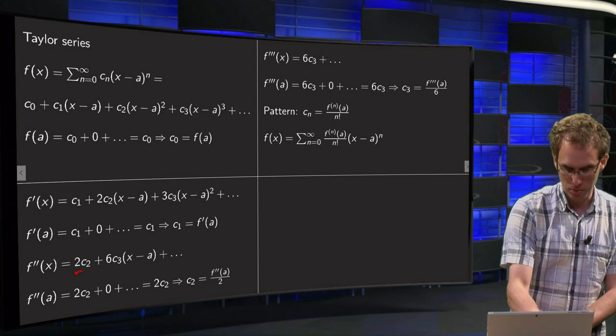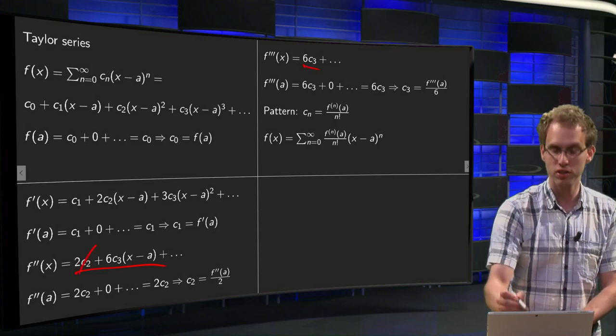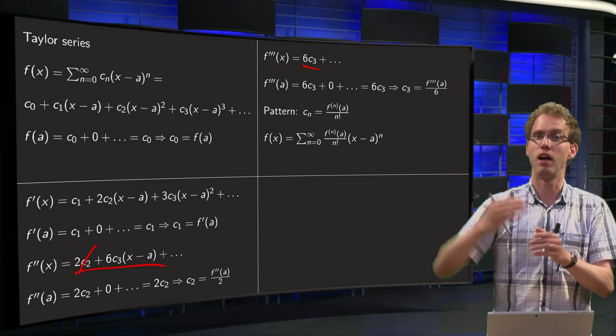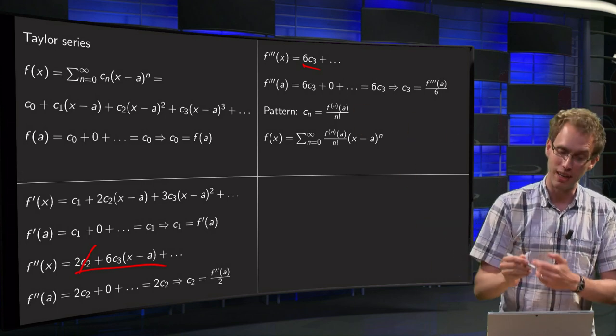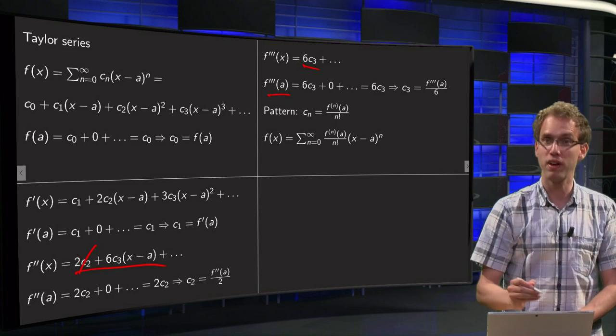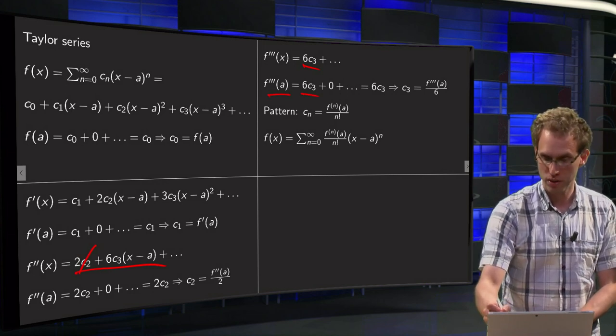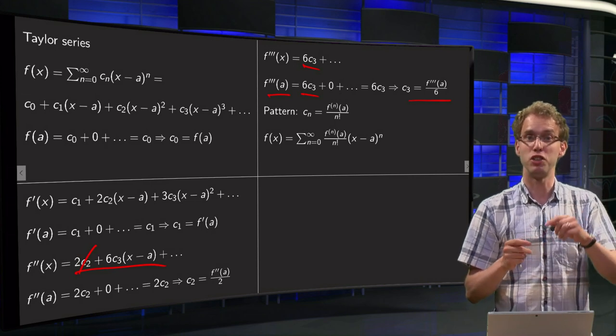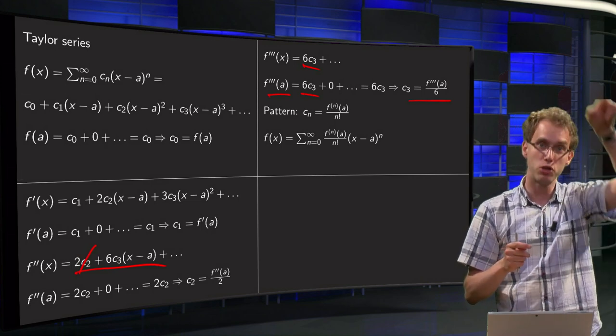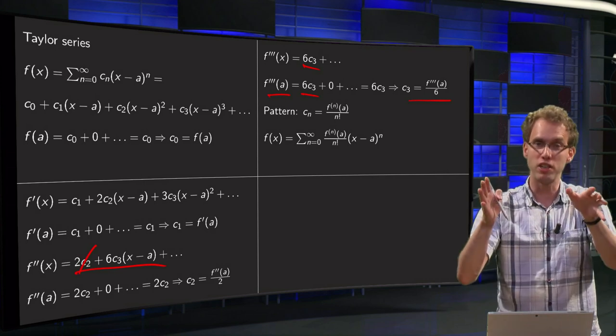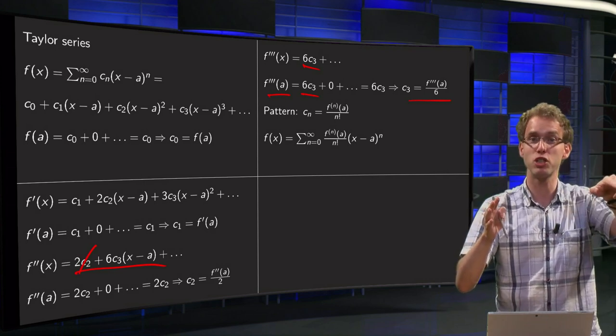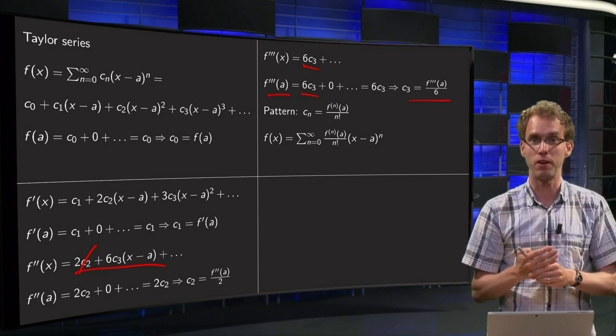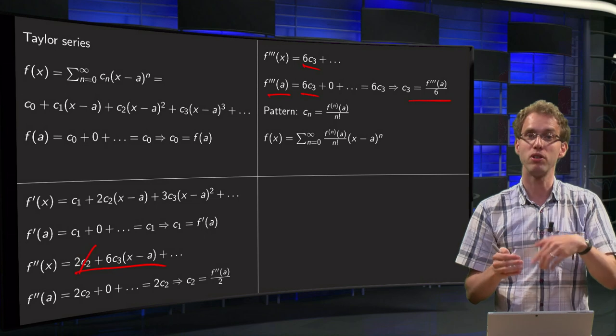Differentiate f double prime again, 2 times c2 drops out, and we get 6 times c3 plus powers in (x-a) in the tail. So we again substitute f triple prime of a and we get 6 times c3, so we can solve c3 equals f triple prime of a divided by 6, which is coming from 3 times 2. First you had the (x-a) cubed, differentiated gave you 3 times (x-a) squared, and another factor of 2 when differentiating that one. So actually it's 3 times 2 times 1, so 3 factorial.